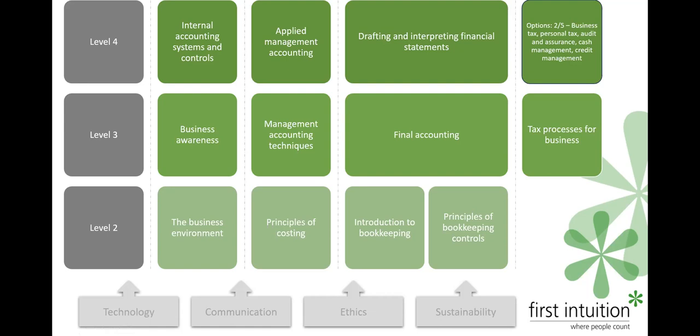At Level 3, the AAT similarly wants candidates to have more business and commercial awareness, hence a unit called Business Awareness. It examines strengths, weaknesses, opportunities, and threats at a higher level — quite a theoretical assessment, and a bit of a diversion from the historically numerical and computational approach. They want candidates to demonstrate business acumen more clearly, while still retaining the numerical content.